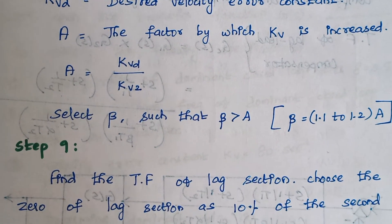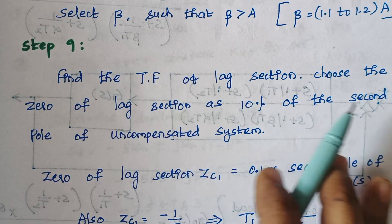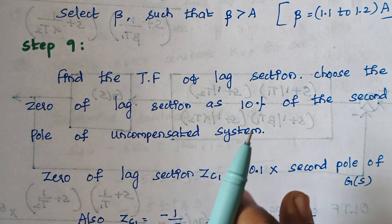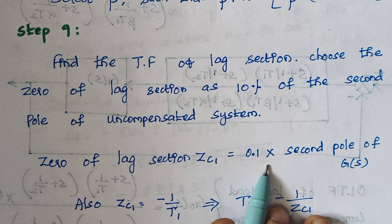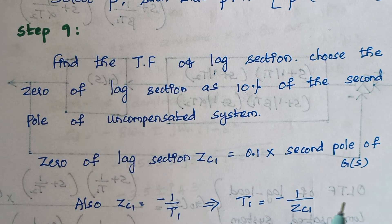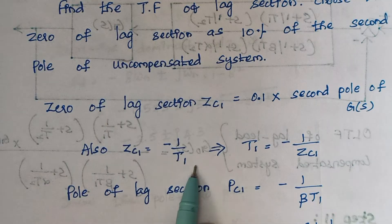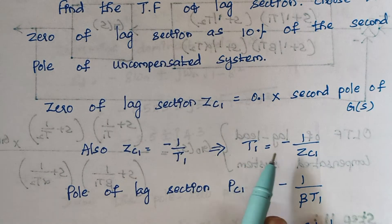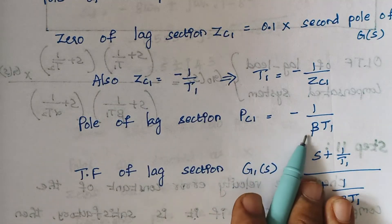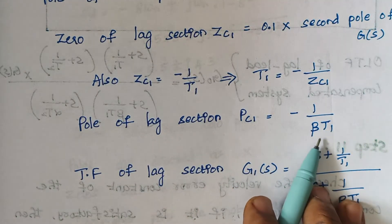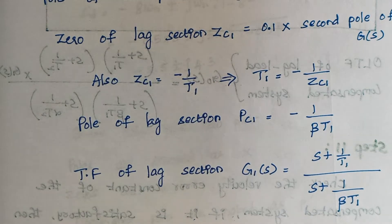Step 9: Finding the transfer function of the lag section. Choose the zero of the lag section as 10% of the second pole of the uncompensated system — that is, 0.1 times the second pole of G(s). The zero Zc1 is given by minus 1 by t1, from which we calculate t1. The pole of the lag section is Pc1 equals minus 1 by (beta·t1). The transfer function of the lag section is (s + 1/t1) divided by (s + 1/(beta·t1)).